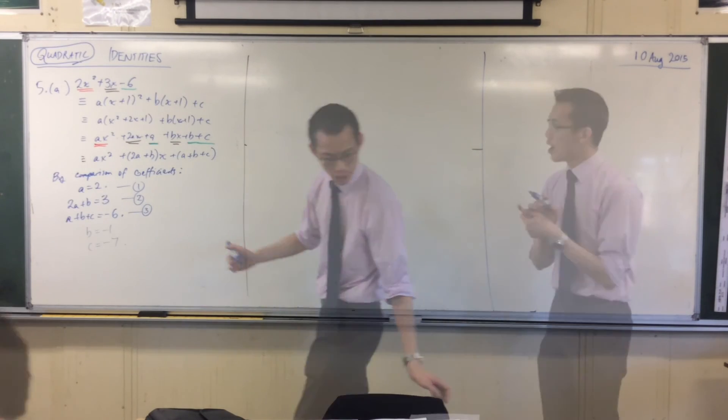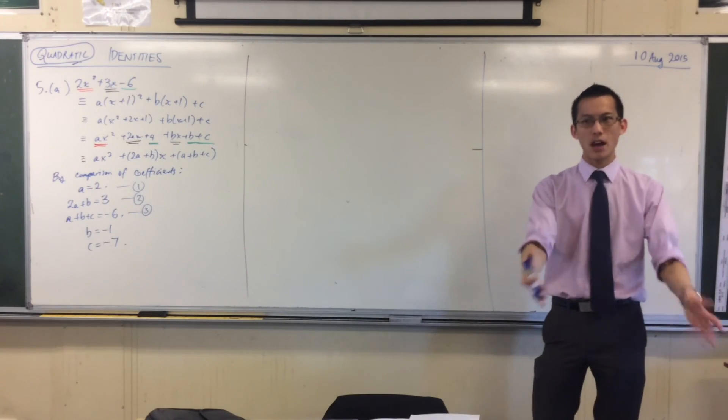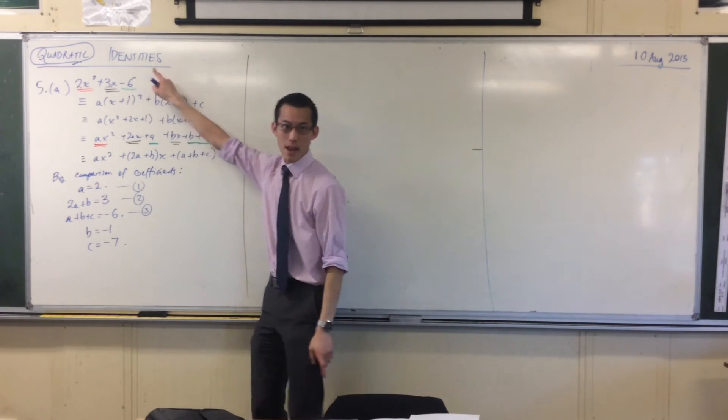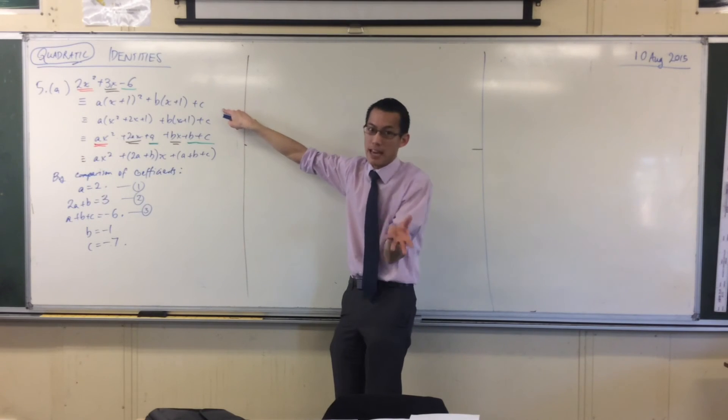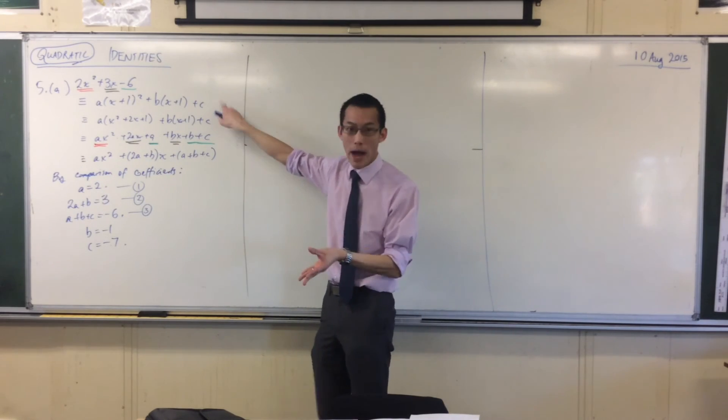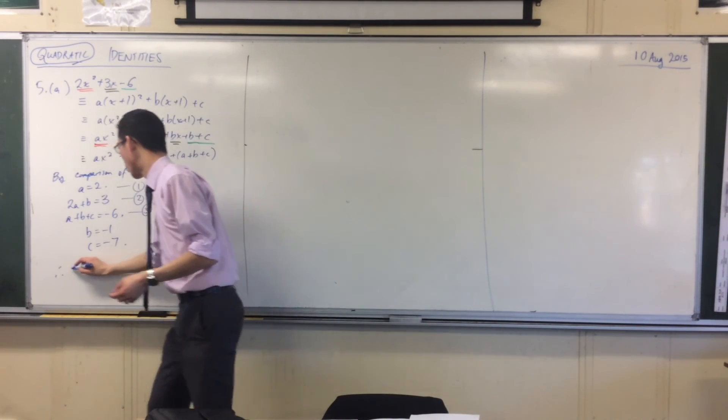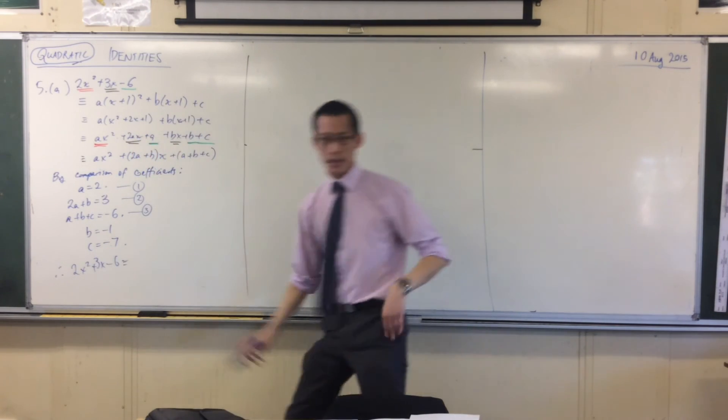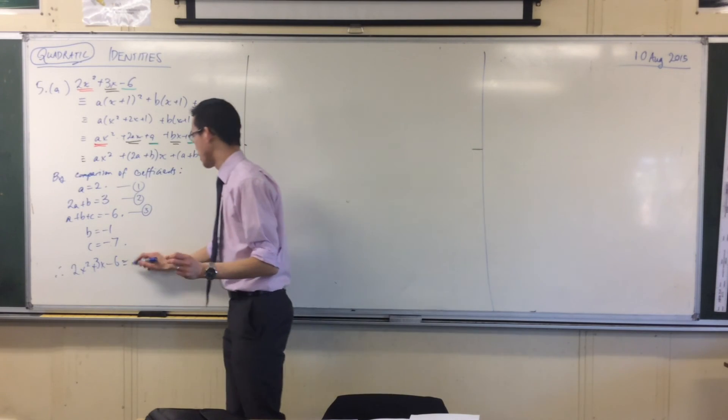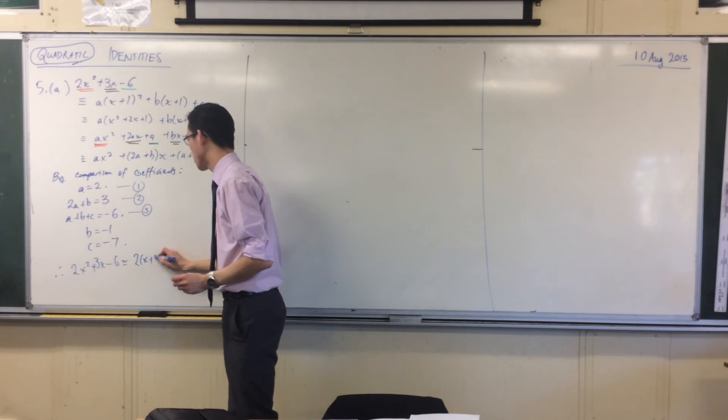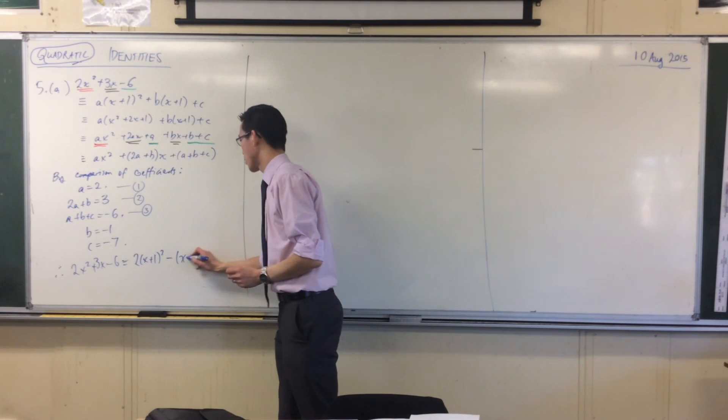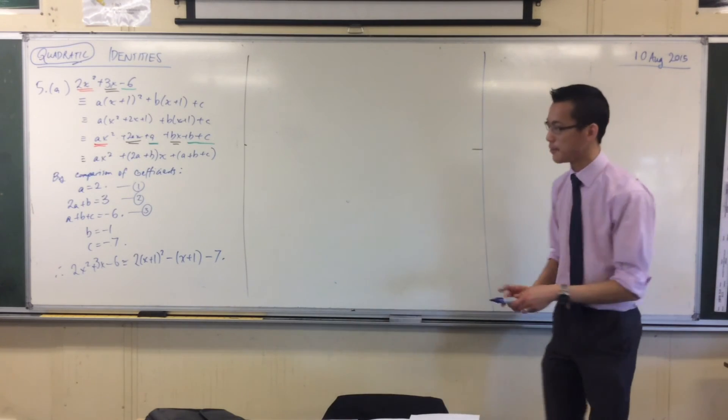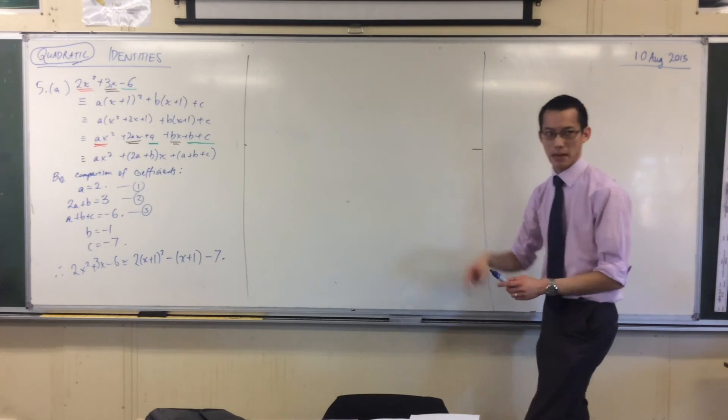You're going to get three values at the end. I've got my values, but I haven't actually answered the question. Look back at what they're asking: express this in this form. I have everything I need, I just haven't said it. So I can say: therefore, 2x² + 3x - 6 is equal to 2(x+1)² - 1(x+1) - 7. Now I've actually said it—that's my quadratic in x+1.